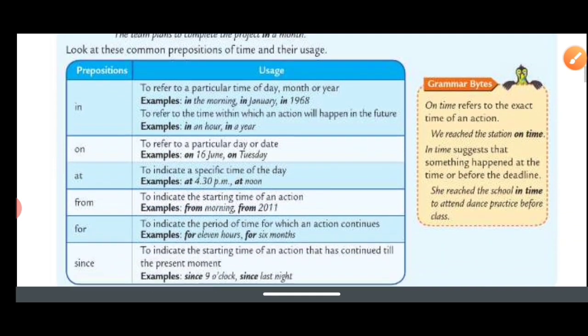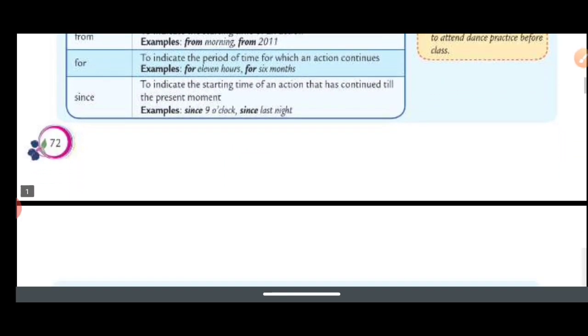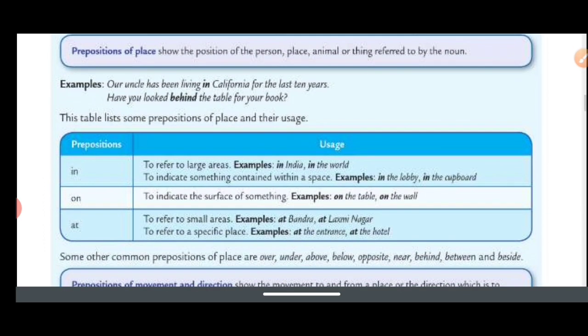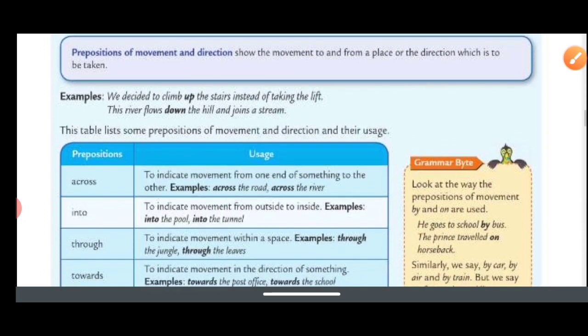Move to next. These are a few examples you have to revise. Prepositions of place refer to positions of persons, place, animal, or things referred to by the noun. Like, our uncle has been living in California for the last year. In California is the place. Prepositions of movement and directions show the movement of the place or directions which to be taken. Like, we decided to climb up the stairs instead of taking the lift. Up is a direction.